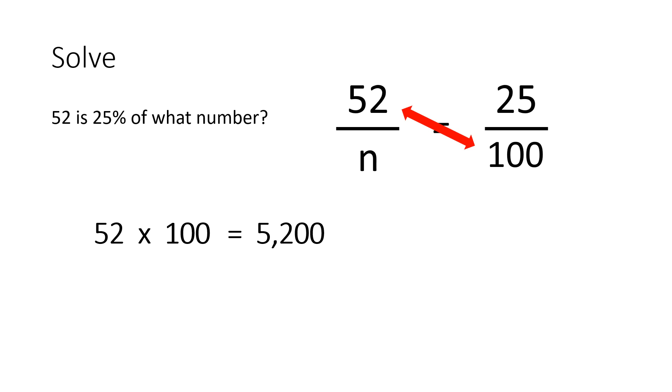We will then take 5,200 and divide it by the remaining number. The only number left is 25. So, let's divide this. 5,200 divided by 25 will equal 208. There is no need for the percent symbol because we are not finding the percent, but we are finding the factor.